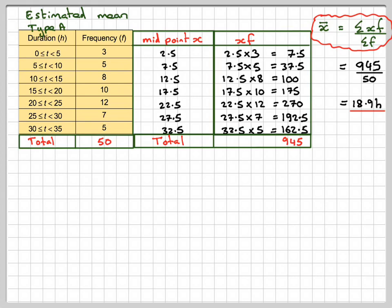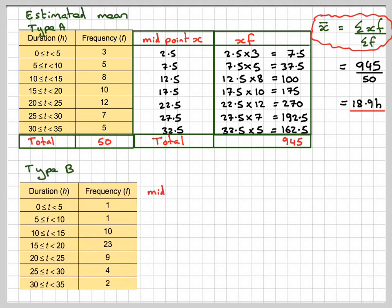Then for Type B, do a similar sort of thing, taking the same midpoints and then multiplying the frequency times x.